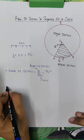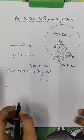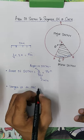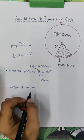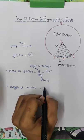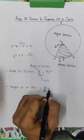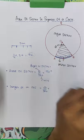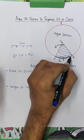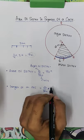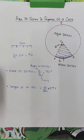Next formula we need to remember for this chapter is the length of an arc. For length of an arc, the formula is: how many degrees angle upon 360 degrees into the length, which is 2 pi r. This will give us the length of the arc.